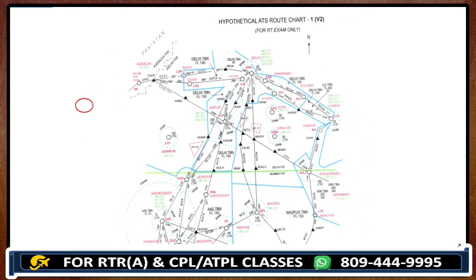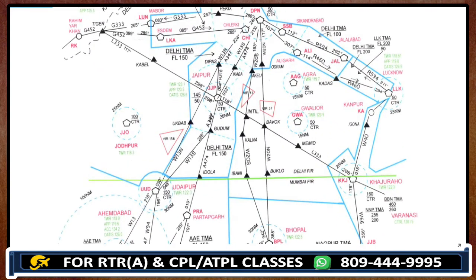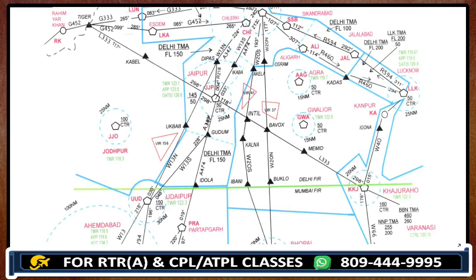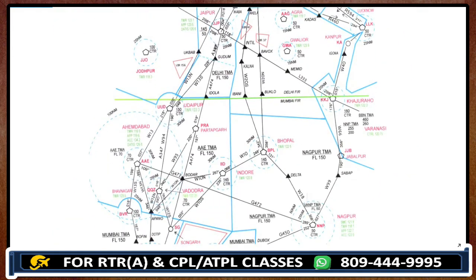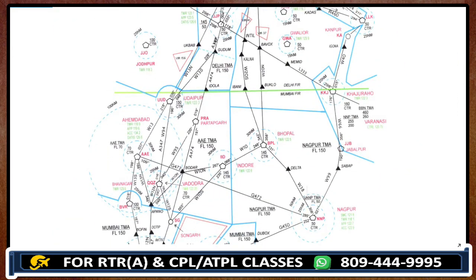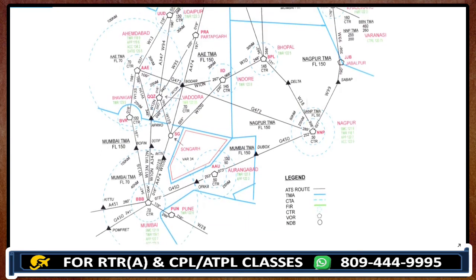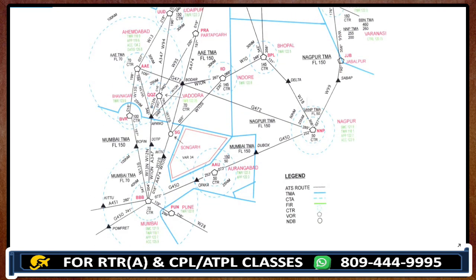Compulsory reporting points use a five-letter code — for example, T-I-G-E-R. If you are going from Tiger to Jaipur, there is another compulsory reporting point represented by a solid triangle named Kabe. If we go from Delhi to Mumbai, then Babox and Buklo are compulsory reporting points. Wherever you see a solid triangle on all the charts, those are the compulsory reporting points.